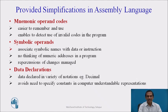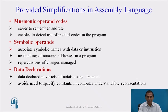The first thing provided in an assembly language is that mnemonic operand codes are declared. These short forms are easier to remember and use, and enable us to detect the use of invalid codes in the program. We use symbolic operands in assembly language which associate symbolic names with data or instructions. There is no need to think of numeric addresses in the program, and repercussions of any change are automatically managed.